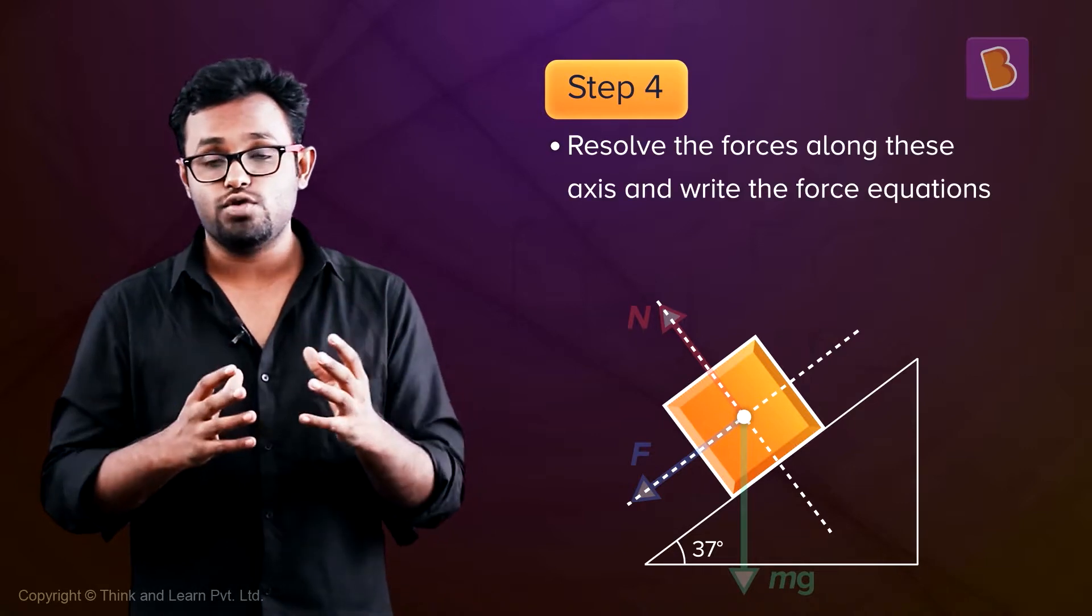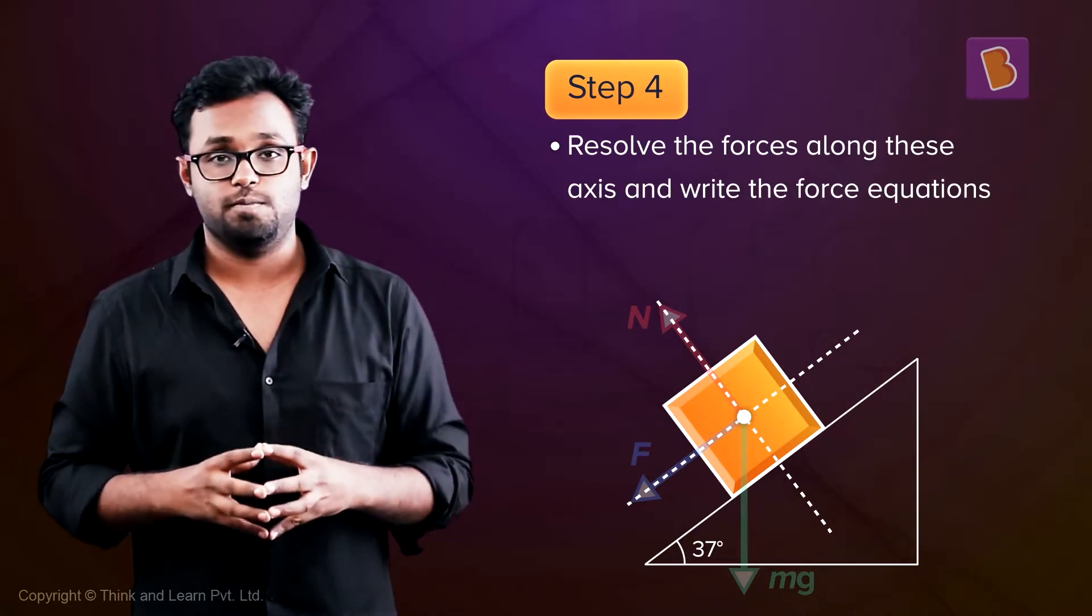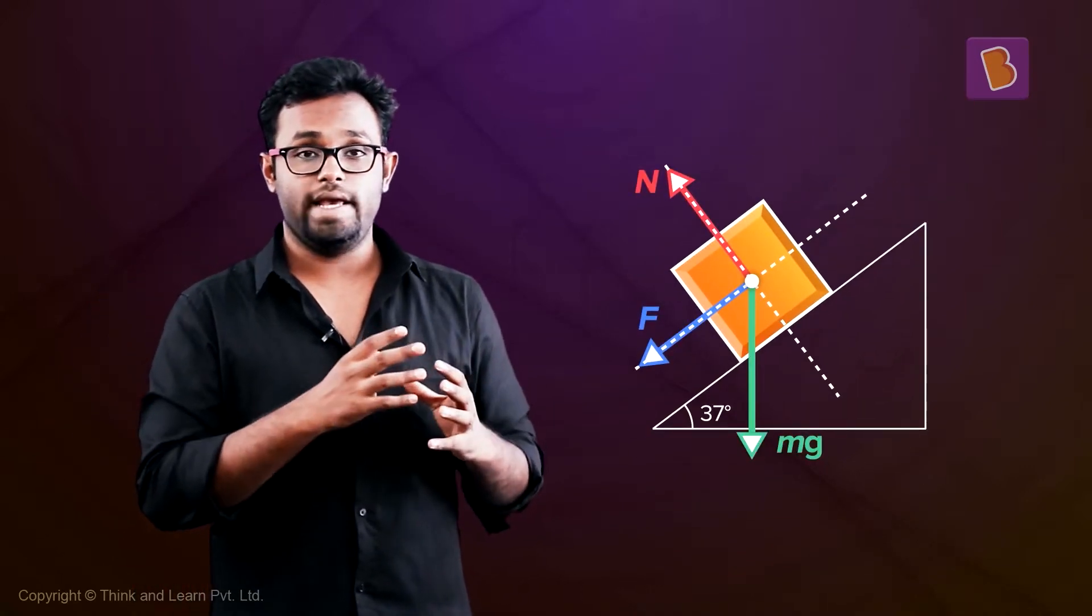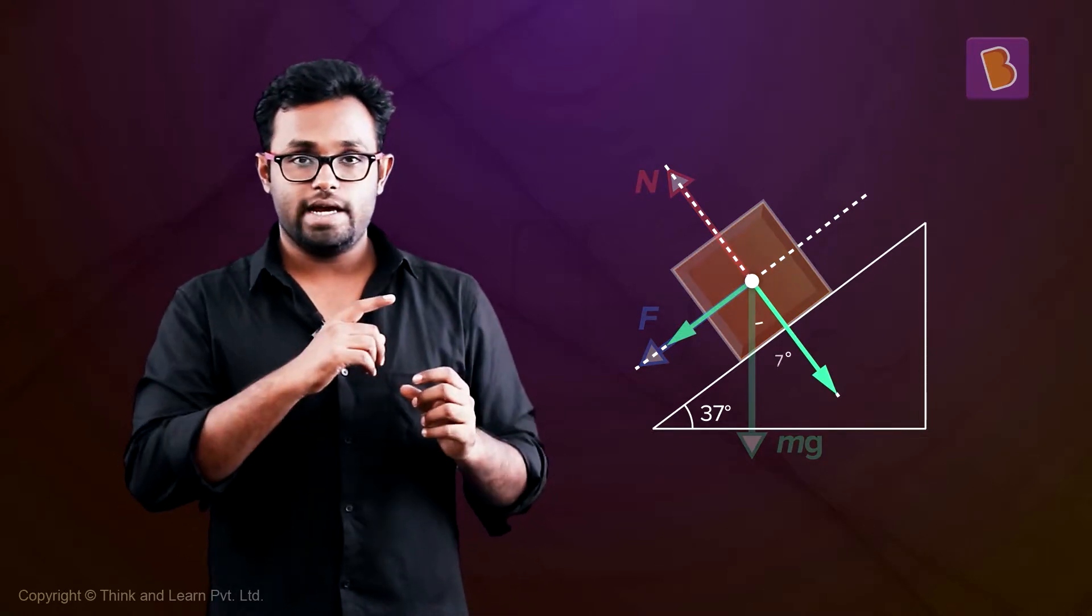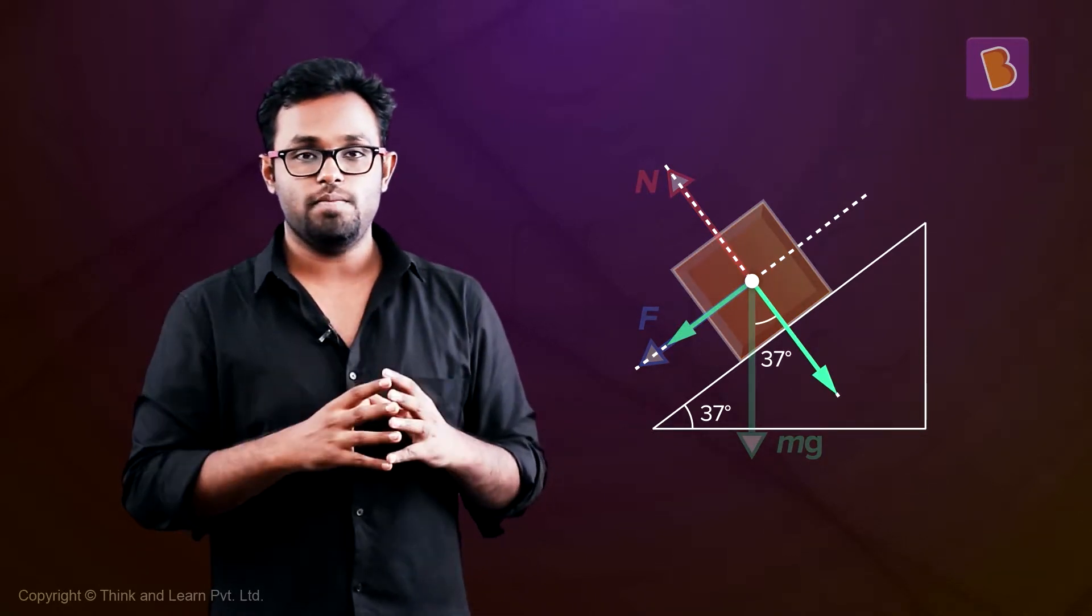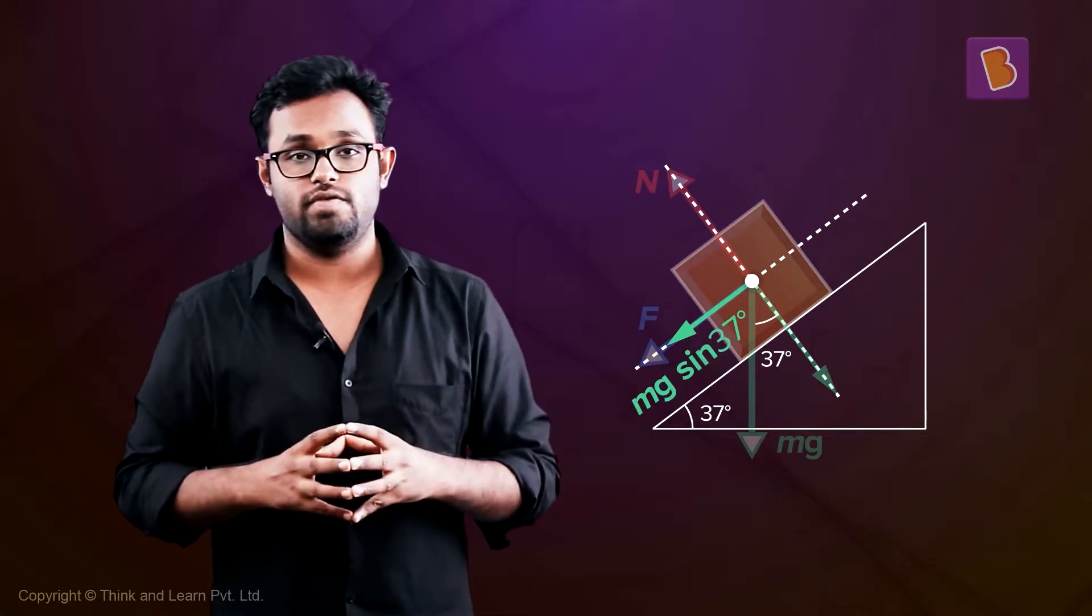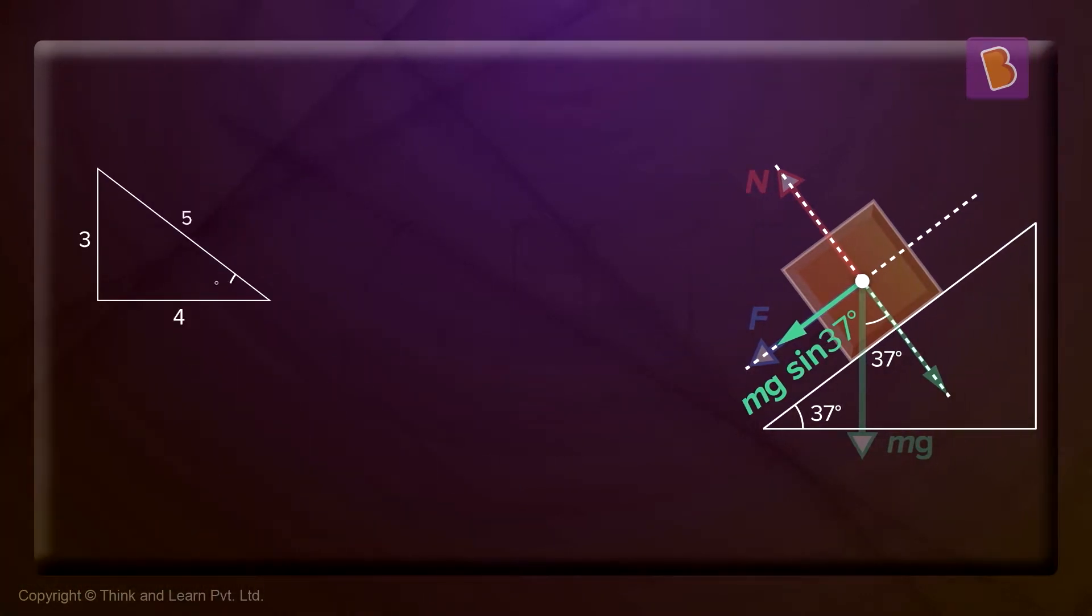Step 4: Resolve the forces along these axes and write the force equations. Now, in this case, if I resolve mg along the x-axis, the axis which we are calling x, then if that angle is 37 degrees, this will be mg sin 37 degrees. And you know the value of sin 37, right? In a 3-4-5 triangle, sin 37 equals 3/5, so that becomes 60 Newtons.